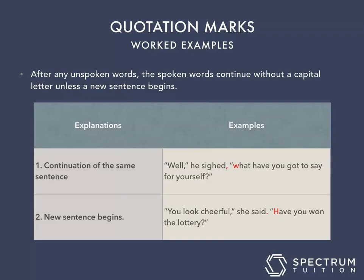After any unspoken words, the spoken words continue without a capital letter unless a new sentence begins. When you continue the same sentence, for example: 'Well,' he sighed, comma, 'what have you got to say for yourself?' The words 'well, what have you got to say for yourself' are within the one sentence, which is why it starts with a lowercase letter in the second part of the quotation.